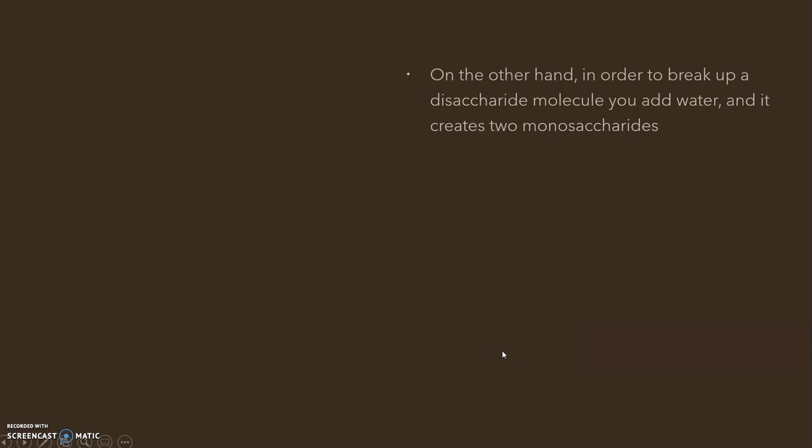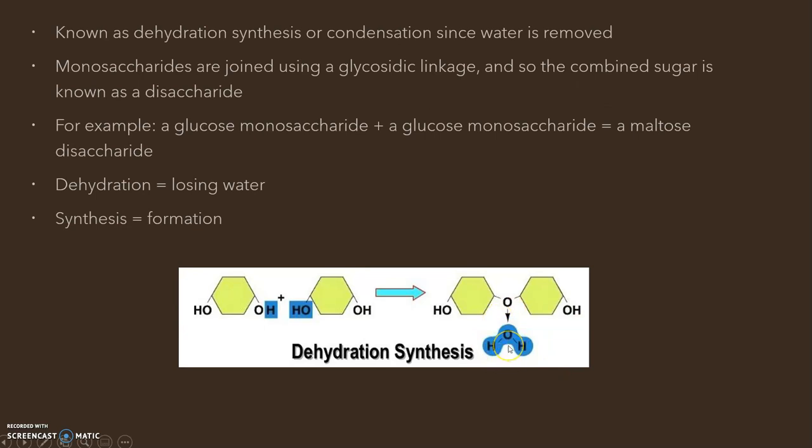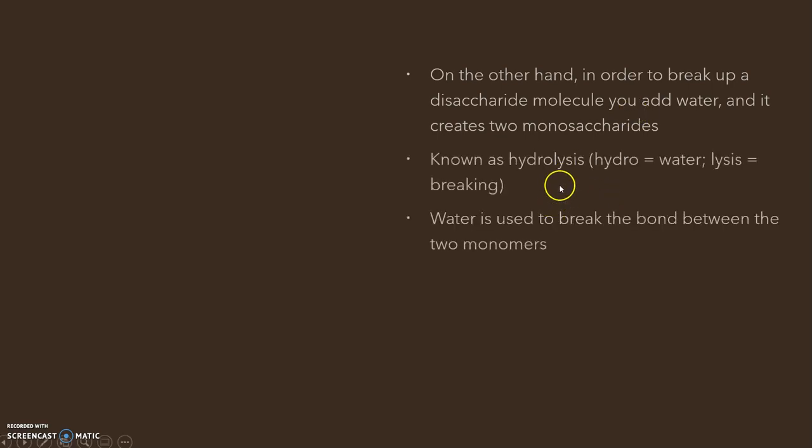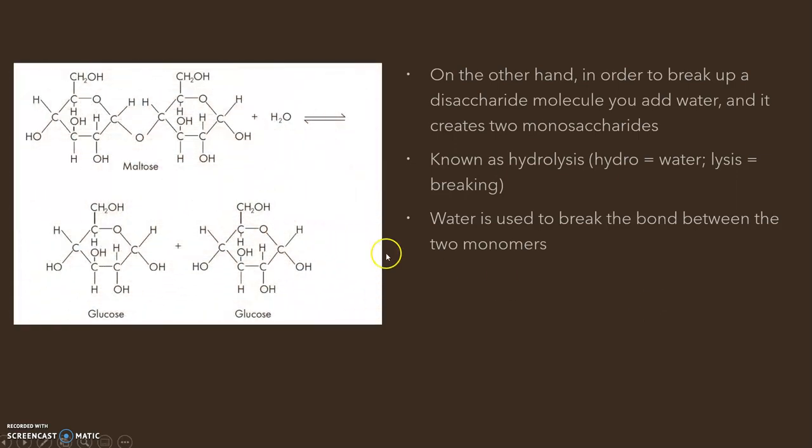Like we mentioned earlier, if you want to break up a disaccharide molecule, you have to add water, because in dehydration synthesis we're removing the water. The opposite of removed is add, so you're adding it. If you want to break a disaccharide, you have to add some water, and this process is known as hydrolysis, because hydro means water and lysis means breaking. Water is used to break that bond between the two monomers.